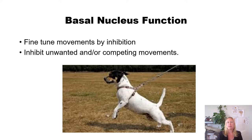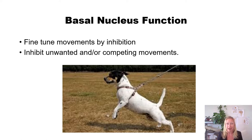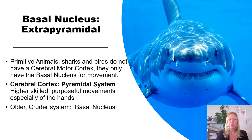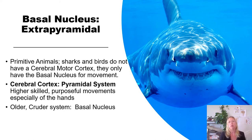A useful analogy: the basal nucleus is like a dog on a leash. The basal nucleus doesn't instigate or create movement — it controls movement. If the basal nucleus isn't working appropriately, the dog would be all over the place. It fine-tunes movements by inhibition, inhibiting unwanted or competing movements. The basal nucleus is considered extrapyramidal — everything beyond the pyramidal tracts (corticospinal and corticobulbar).